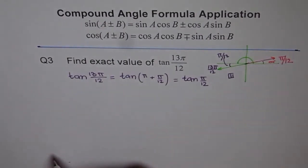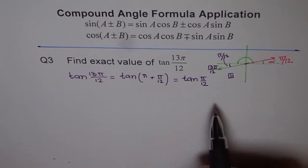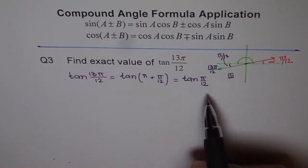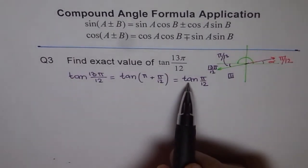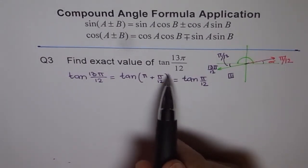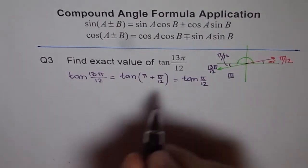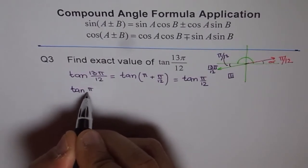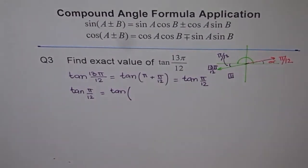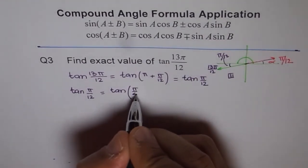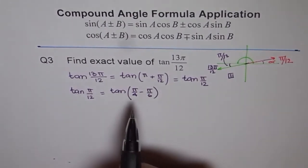That is the first simplification. Remember: whenever you have a reflex angle, it is a good idea to write it in terms of the acute reference angle and then solve. Now let's figure out tan π by 12. Tan π by 12 can be written using special angles — π by 4, π by 6, and π by 3. We can write π by 12 as π by 4 minus π by 6.